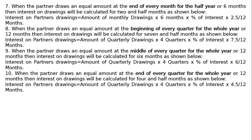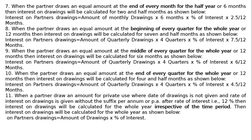The tenth rule: when the partner draws an equal amount at the end of every quarter for the whole year or 12 months, then interest on drawings will be calculated for 4 and half months. Interest on partner's drawings equals amount of quarterly drawings multiplied by 4 quarters multiplied by percentage of interest multiplied by 4.5 upon 12 months.